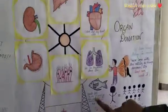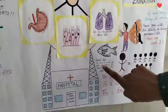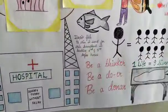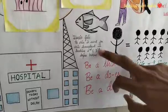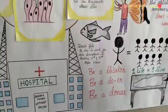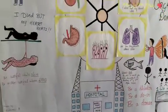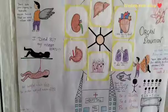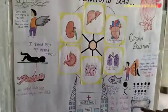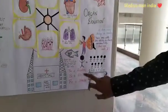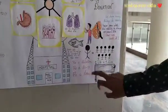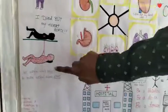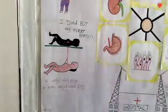This is a good chart. The skin is used for skin transplant in treating second and third degree burns — for skin transplantation. 'One life is equal to nine lives.' Because: be a thinker, be a doer, be a donor. This is a good chart.